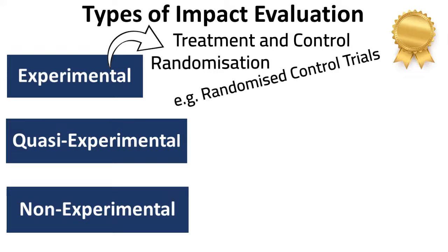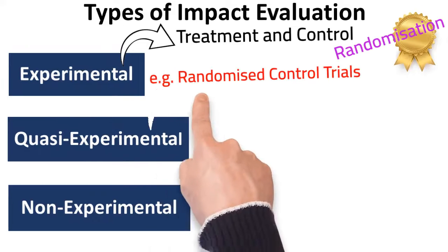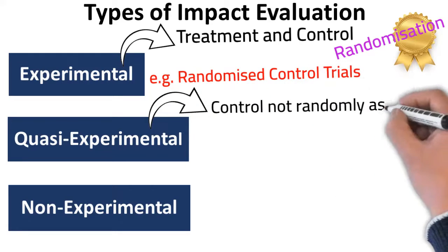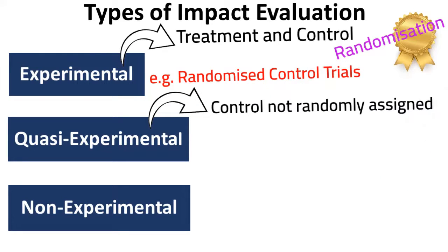The quasi-experimental impact evaluation uses a comparison group that is not randomly assigned but is carefully selected to be similar to the intervention group in terms of key characteristics. Quasi-experimental designs are used when it is not possible or not ethical to conduct an RCT, involving selecting a comparison group similar to the treatment group in terms of demographics and other factors.